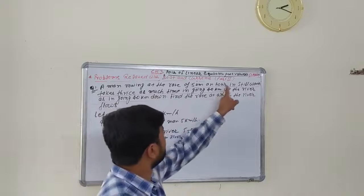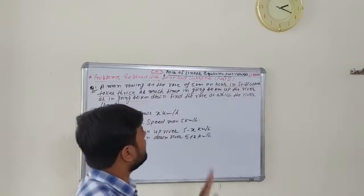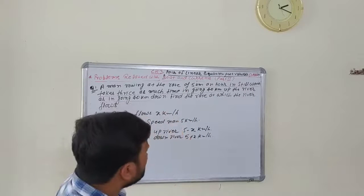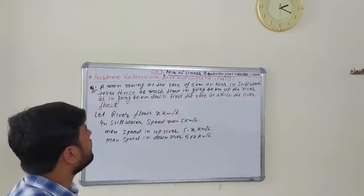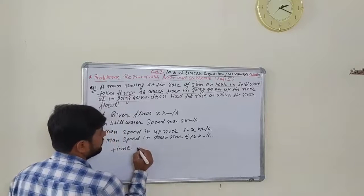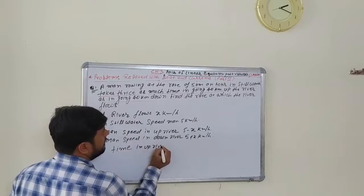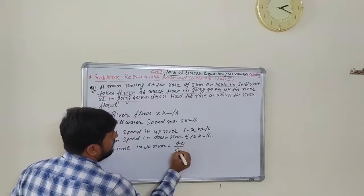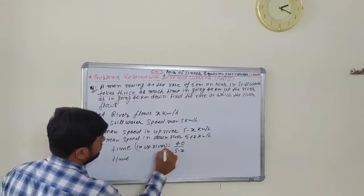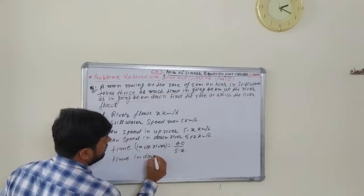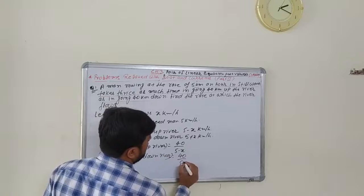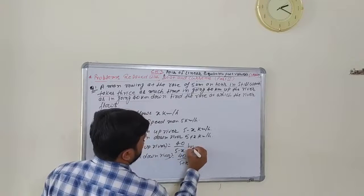In still water it takes thrice as much time as going 40 km down. So time taken upstream for 40 km is 40 upon (5 minus x), and time taken downstream for 40 km is 40 upon (5 plus x).